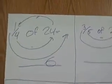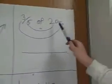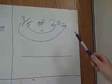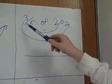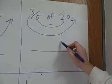For this one, we did 5 divided by 20, which is 4, times 3, and it was 12.